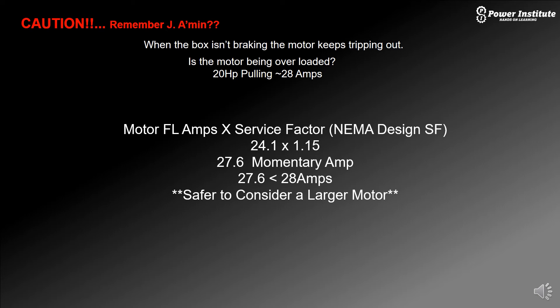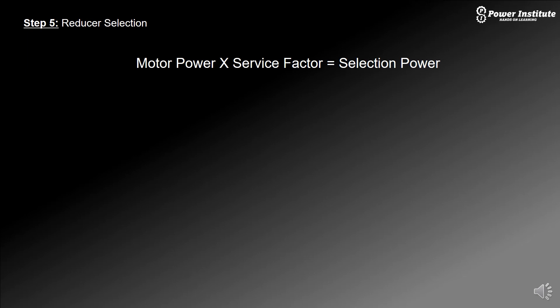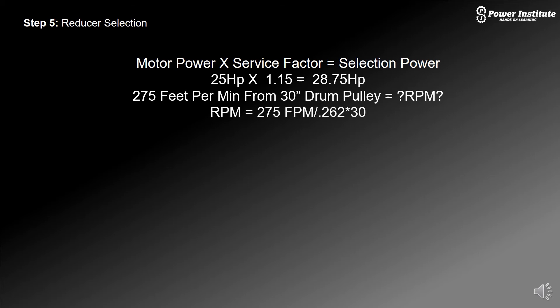If we take the motor power times the service factor that we found, 25 horsepower times that 1.15 service factor, we need at least 28.75 selection horsepower out of our gearbox. To get our low speed shaft RPM, we'll take the 275 feet per minute that Jay mentioned, 275 feet per minute turning a 30 inch drum pulley. To get that RPM, we do 275 feet per minute divided by the nominal 0.262 times the 30 inch drum. That gets us 35 RPM. So we know we need a 35 RPM output speed.